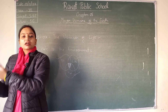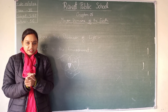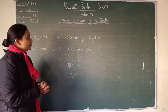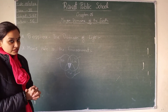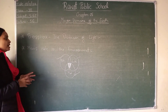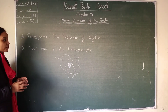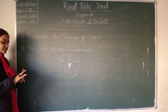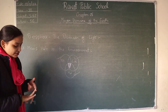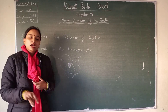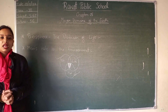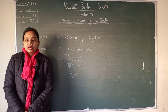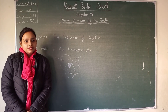By completing this topic, we have completed chapter number 5, Major Domains of the Earth. We have discussed all the domains: first lithosphere, second hydrosphere, third atmosphere, and fourth biosphere. I hope you all have understood all these topics well. That's it for today's class. Thank you.